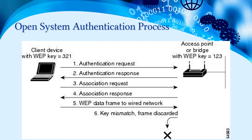In this picture you can see how WEP authentication happens. On the access point or bridge, we configure the WEP key. When the client device starts connecting to the access point, an authentication request is sent, and the access point gives the authentication response. The client then sends an association request, and the access point responds. The client sends the WEP data frame to the wired network, and the access point verifies whether the key matches. If it matches, the connection is established; if not, the frame is discarded.